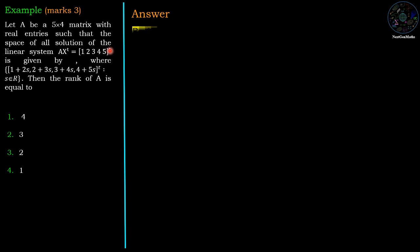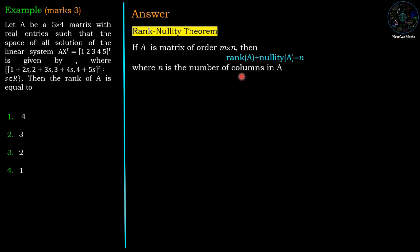The statement is: if A is a matrix of order m cross n, then rank of A plus nullity of A equals n, where n is the number of columns in A, and nullity of A is the dimension of the solution space of the homogeneous system AX transpose equals 0.